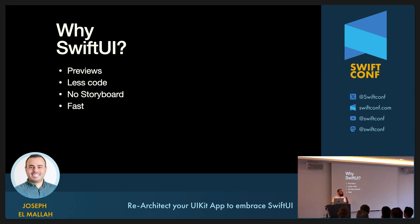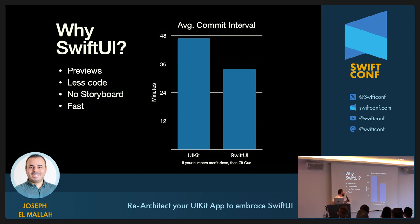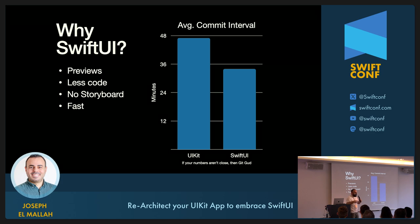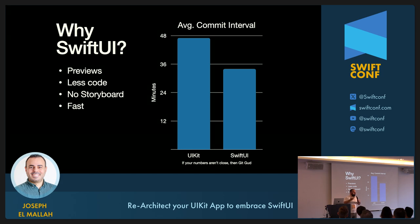As a fun challenge for this conference, I went through my git commit history and checked the average minutes between commits when coding with UIKit versus when I started coding in SwiftUI. Please, this is personal to me — if your numbers aren't like this, don't get desperate. I noticed about 20% more efficiency. I was quicker in delivering commits, which translates normally to quicker code. That's at least how I decided to interpret this metric.